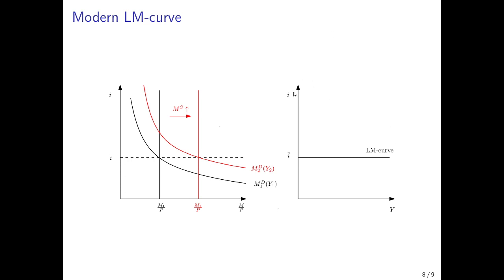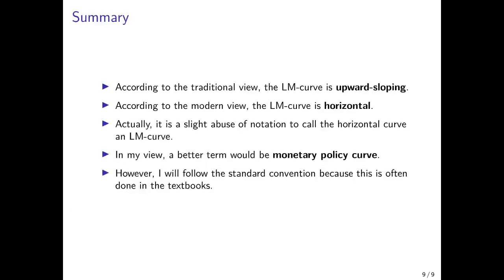However, I nevertheless follow the convention in the standard textbooks, such that I do not cause any confusion and will also call this the LM curve from now on. So to summarize, according to the traditional view, the LM curve is upward sloping. According to the modern view, the LM curve is horizontal, which is then a slight abuse of notation to call it an LM curve. But nevertheless, I do it just to follow this convention in the following chapters and following videos.